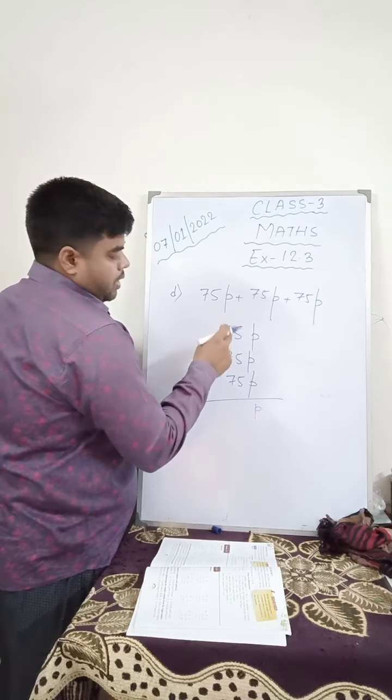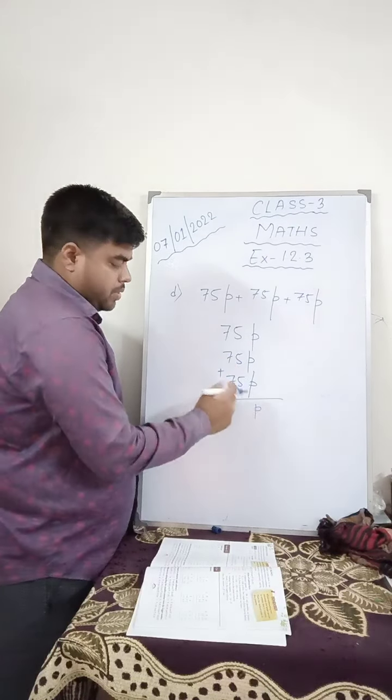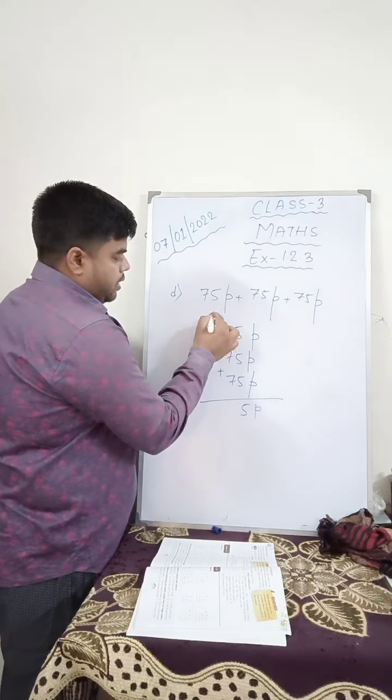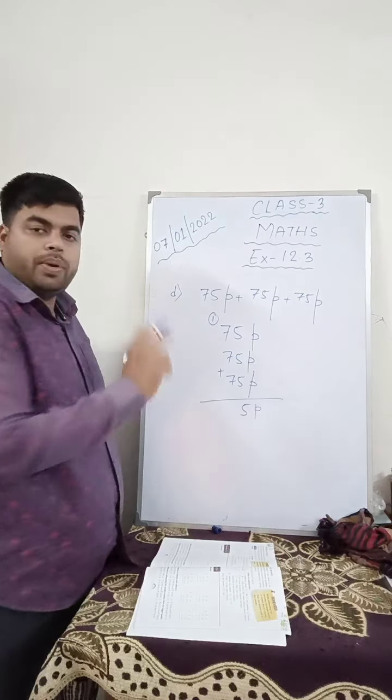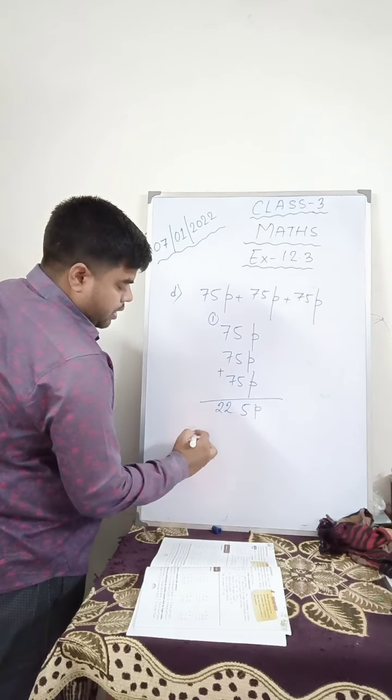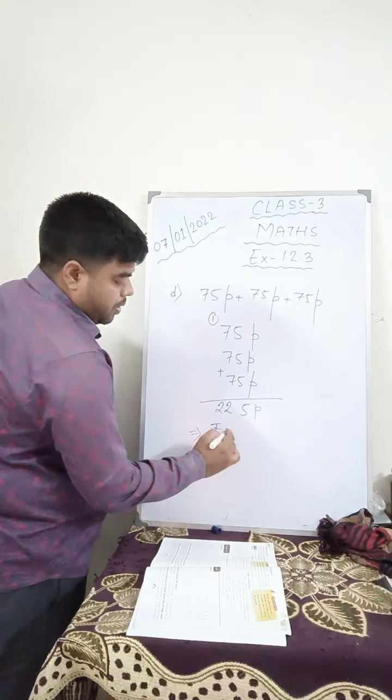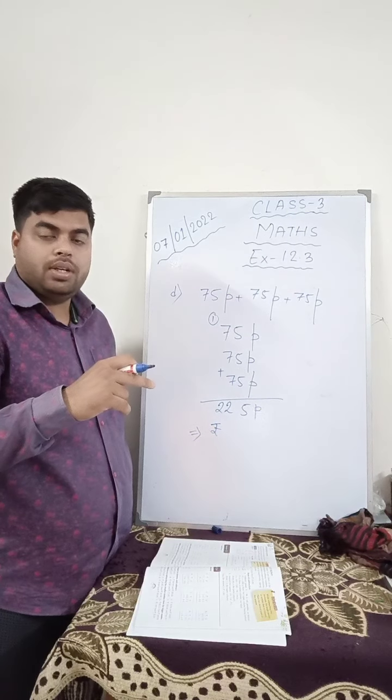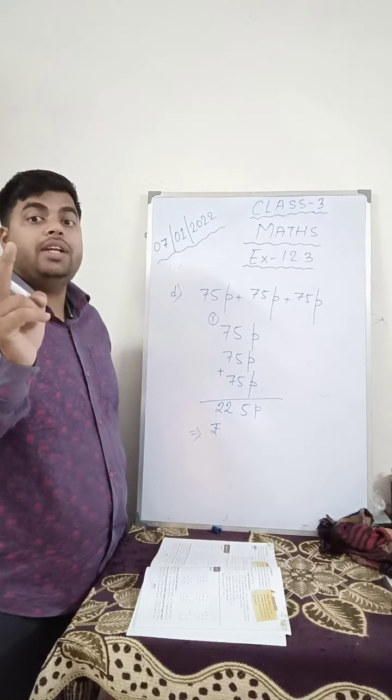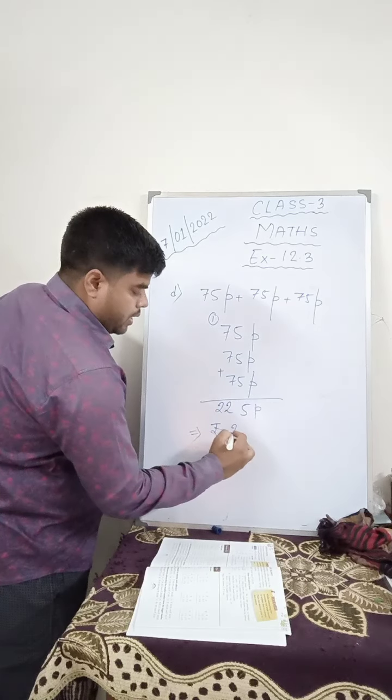Then you write paisa here. 5 plus 5 is 10, 10 plus 5 is 15, 1 in hand. 3 sevens are 21 plus 1, 22. Again, you give rupees symbol because they have asked you to give the answer in rupees and use a decimal. So, 2.25.